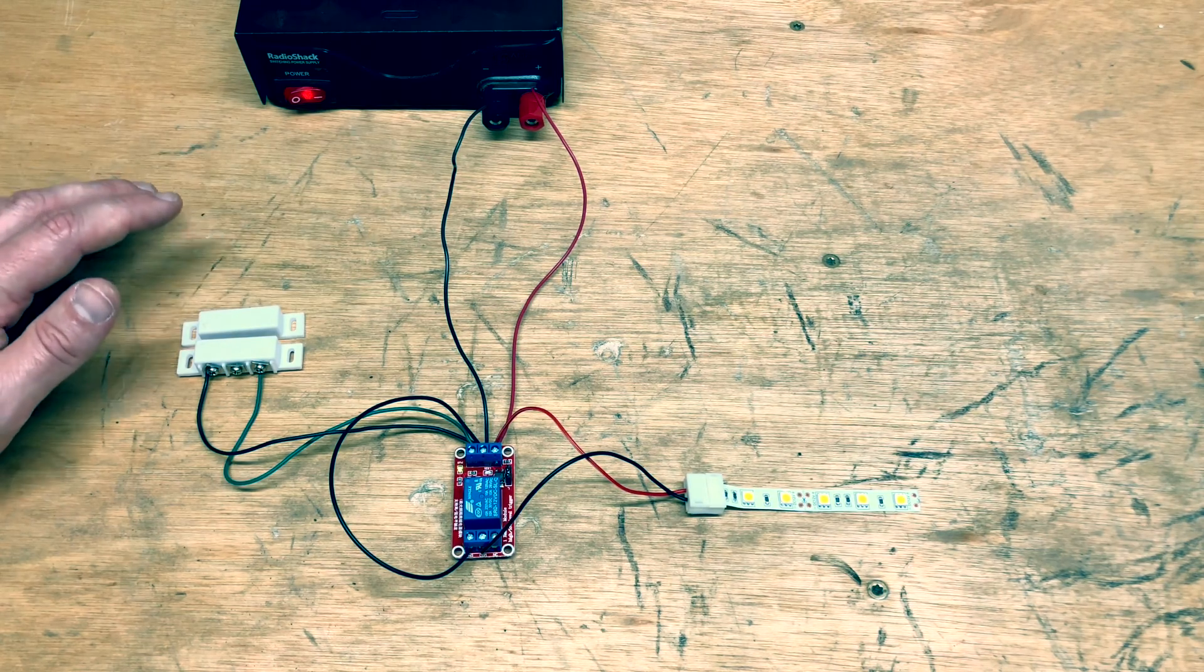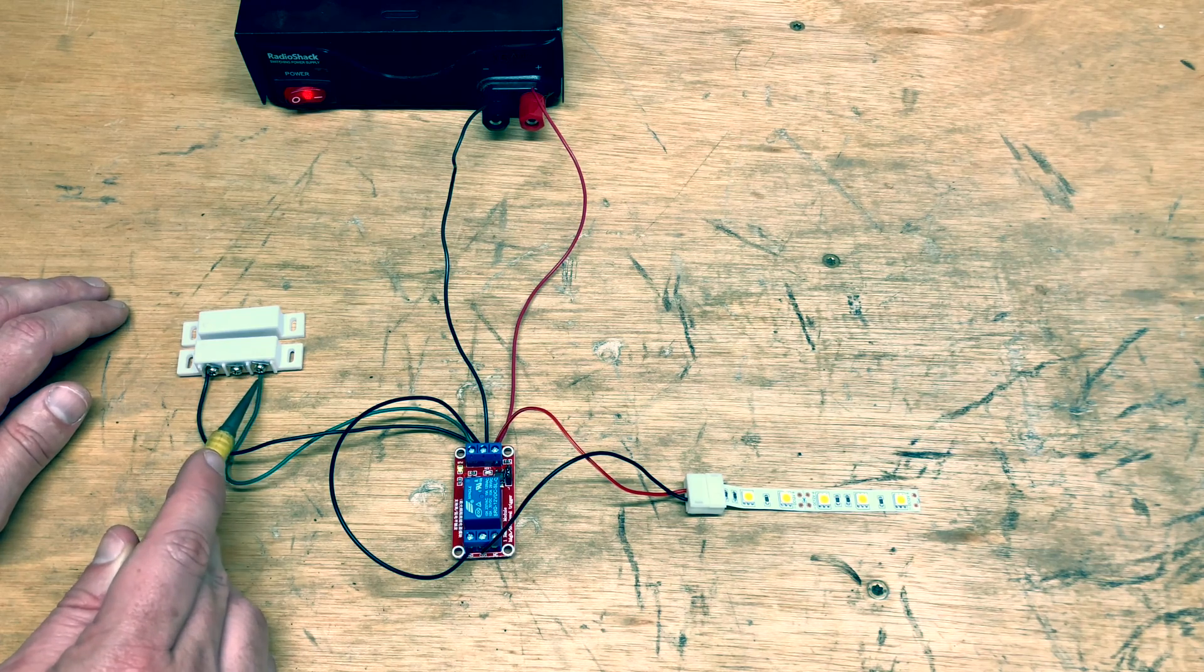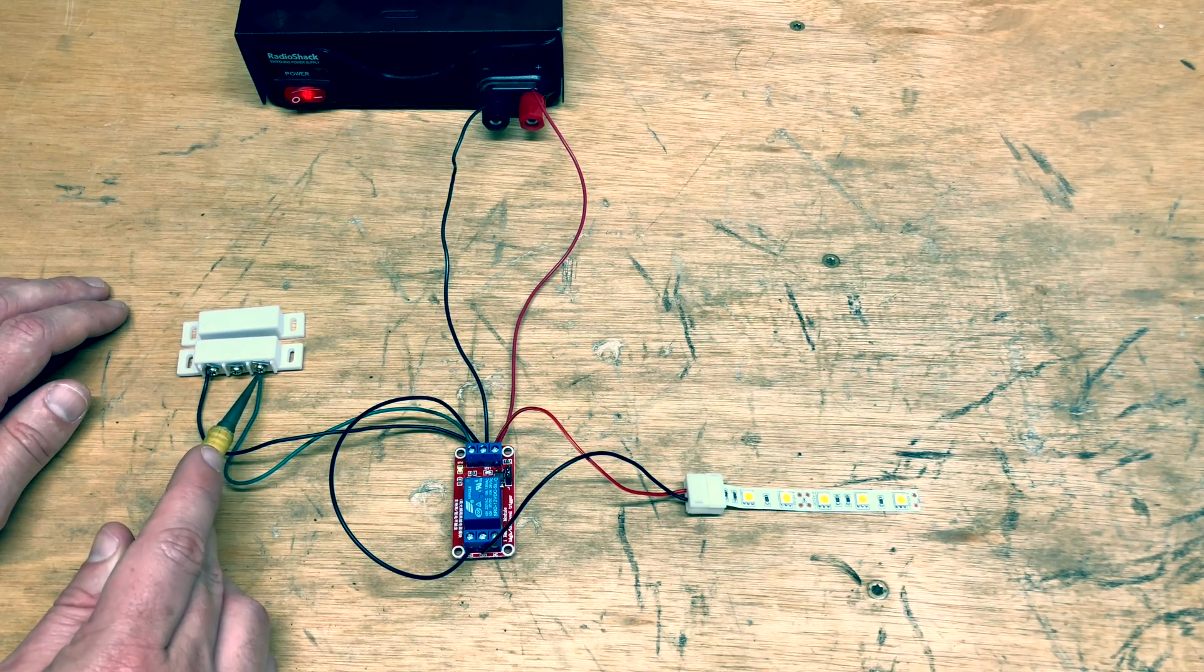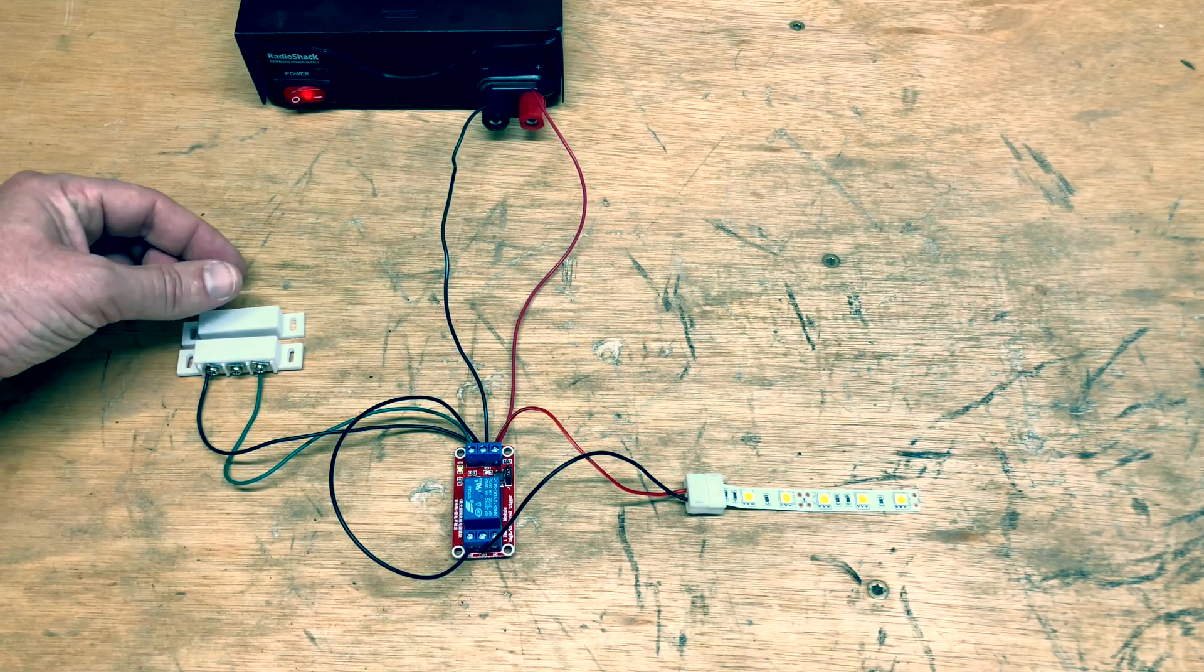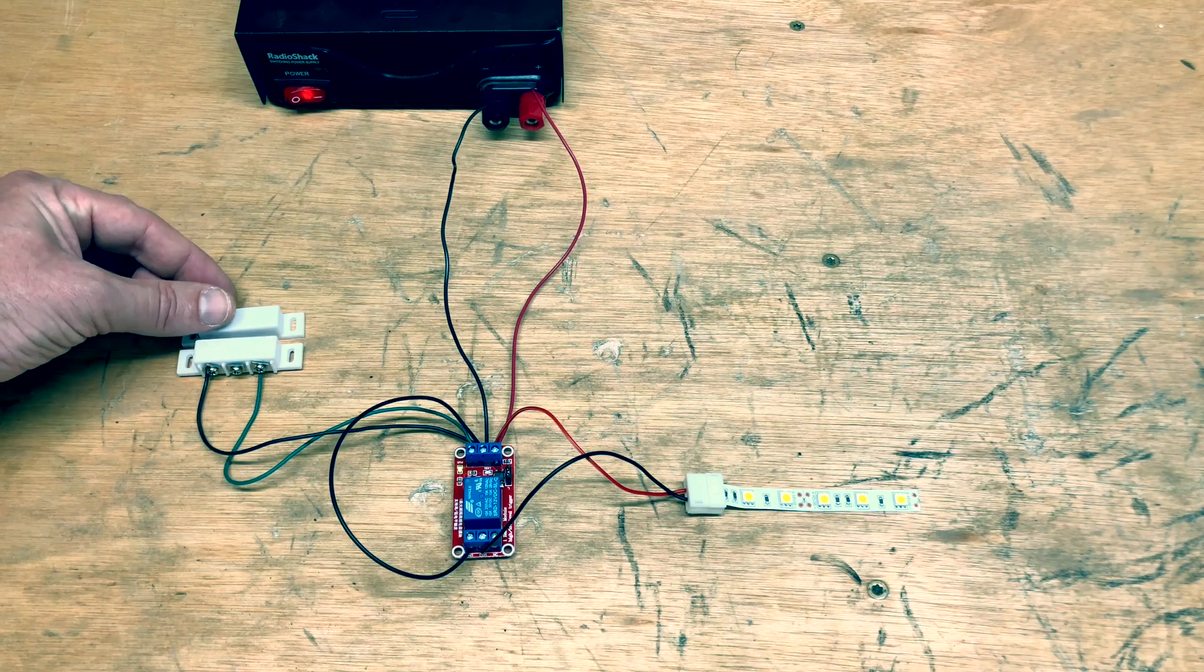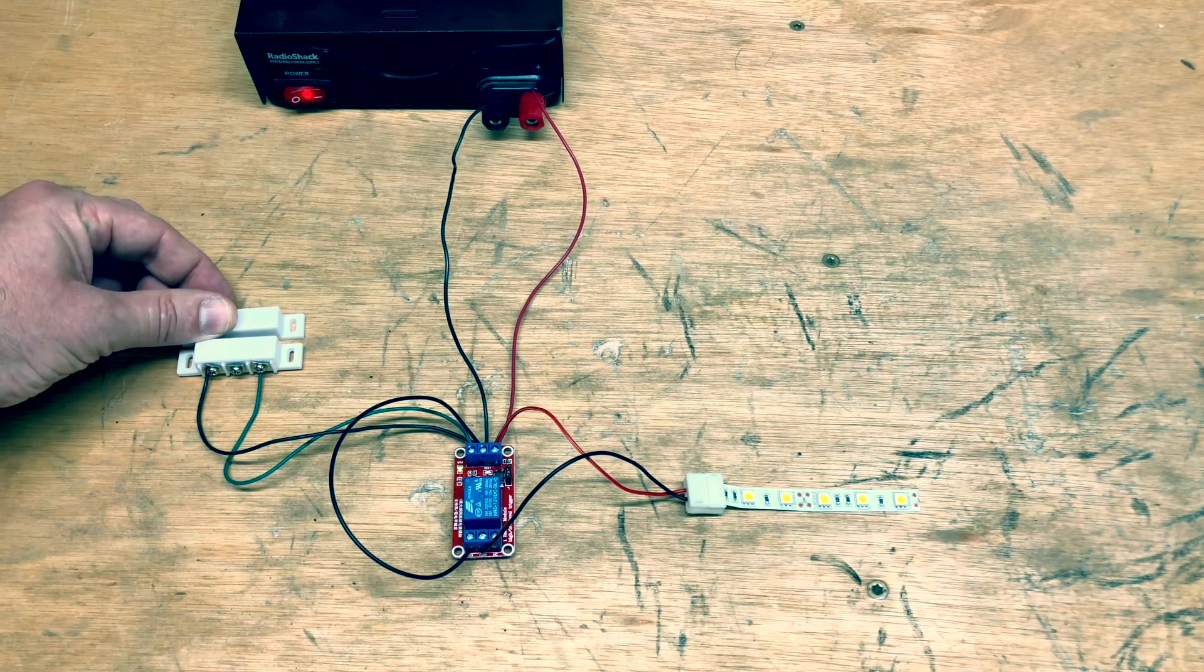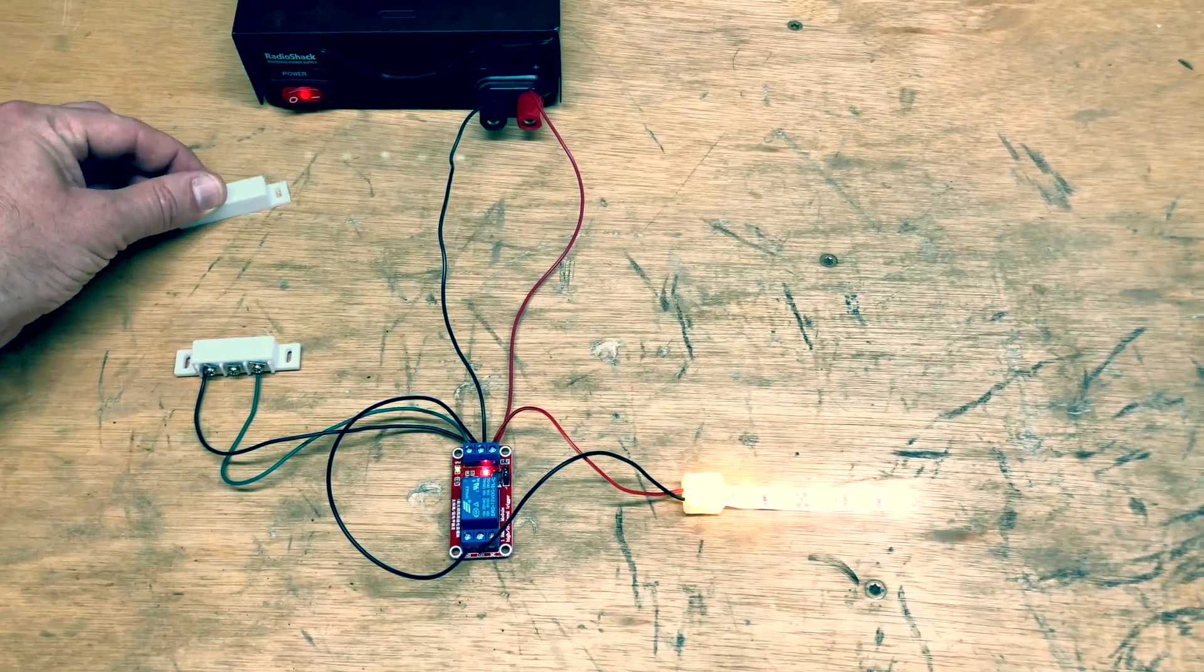Now if you want it to work in the opposite direction it's very simple. Simply move this green wire here from normally open to normally closed and this setup will work in the opposite. That means when the door is closed for example the light would be on now, and then you open the door the light would go off. I don't have it wired that way in this example.